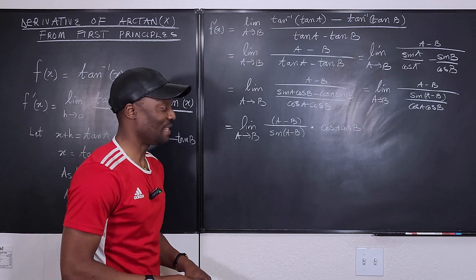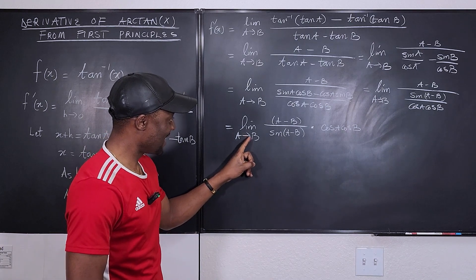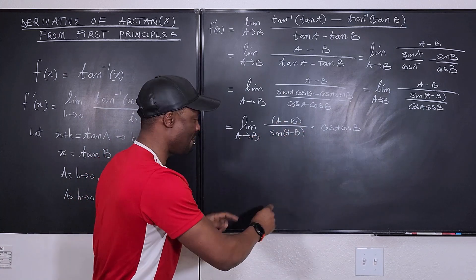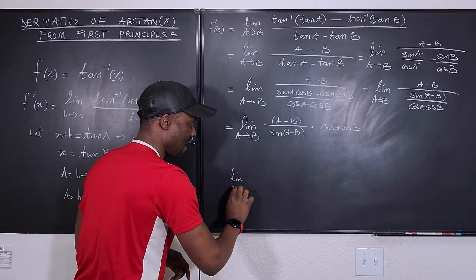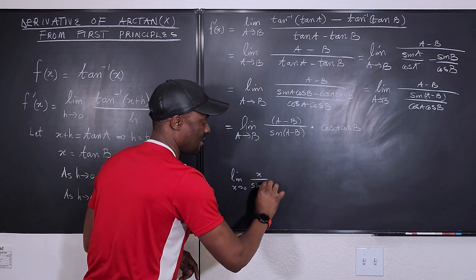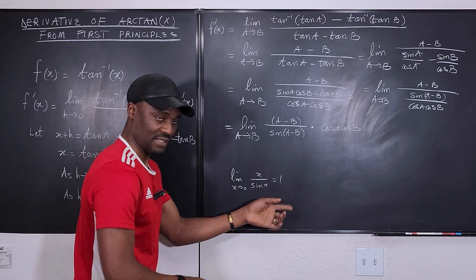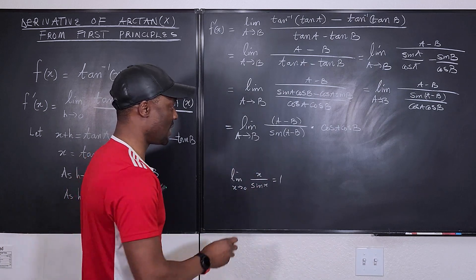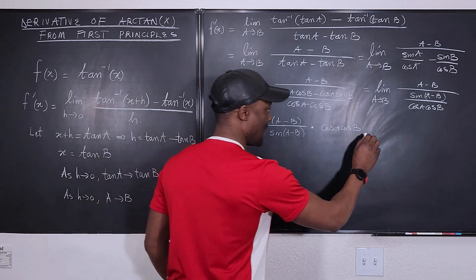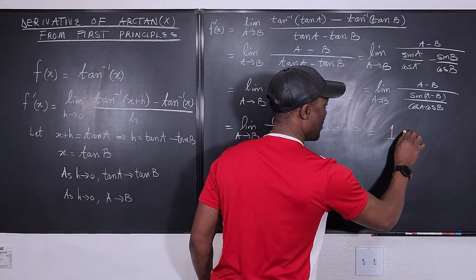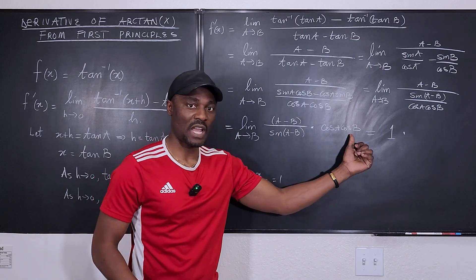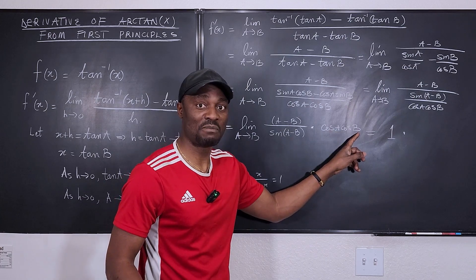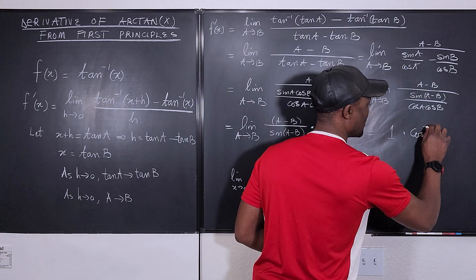Now let's take the limit. As a goes to b, both (a minus b) and sin(a minus b) go to zero. Using the identity that the limit as x goes to 0 of x over sin(x) equals 1, this entire first factor goes to 1. For the remaining factor, as a goes to b, cos(a) becomes cos(b), so we get cos(b) times cos(b), which is cosine squared b.